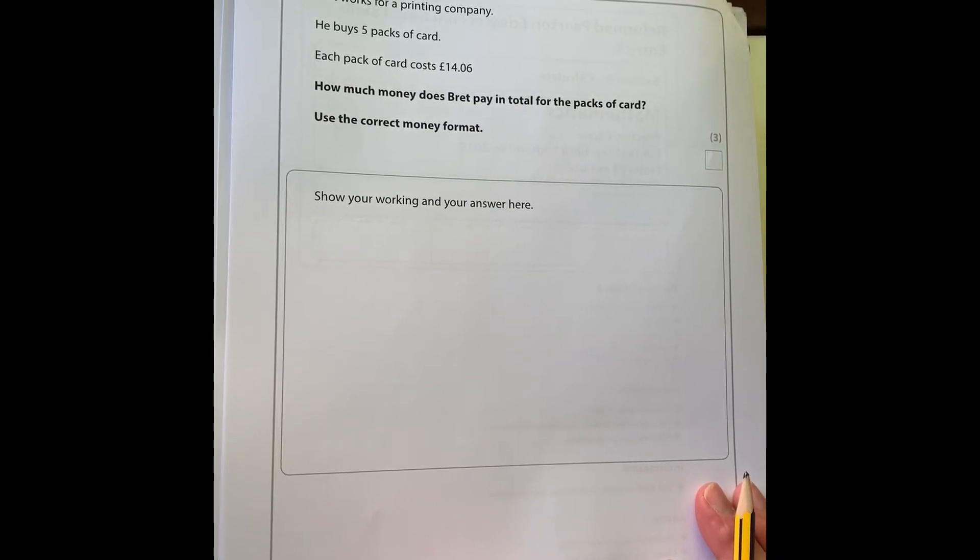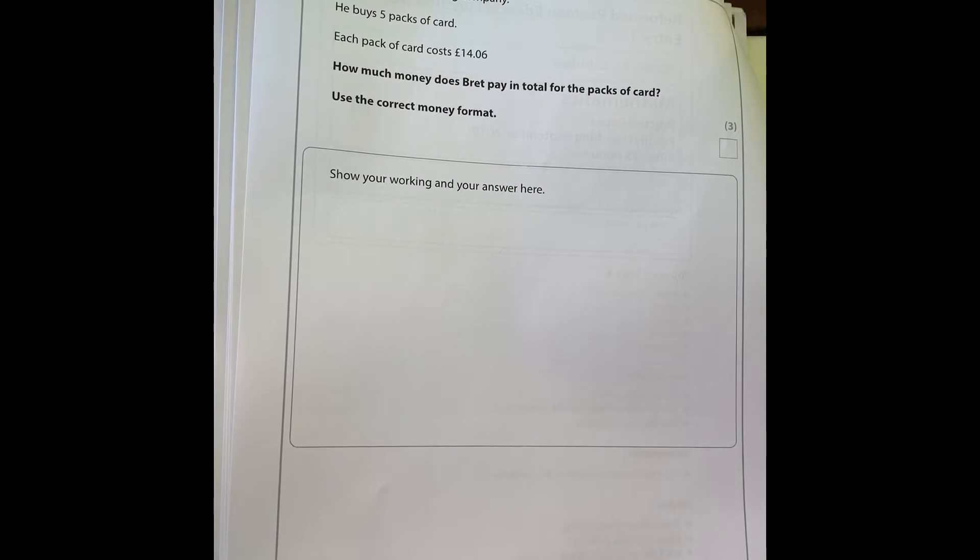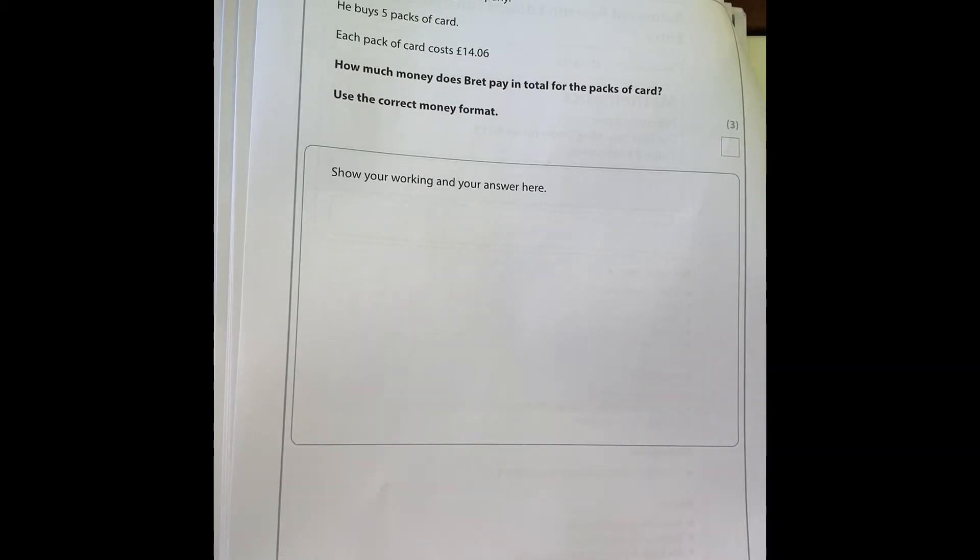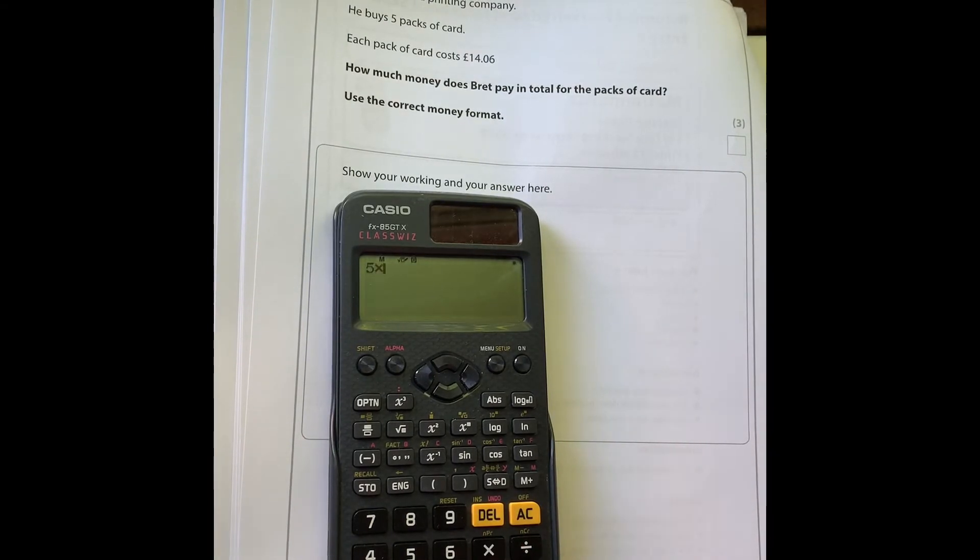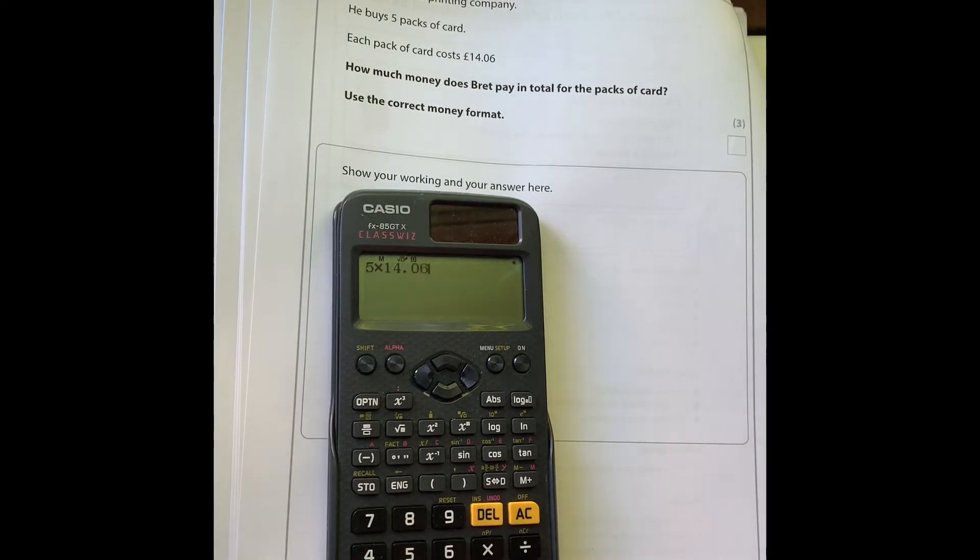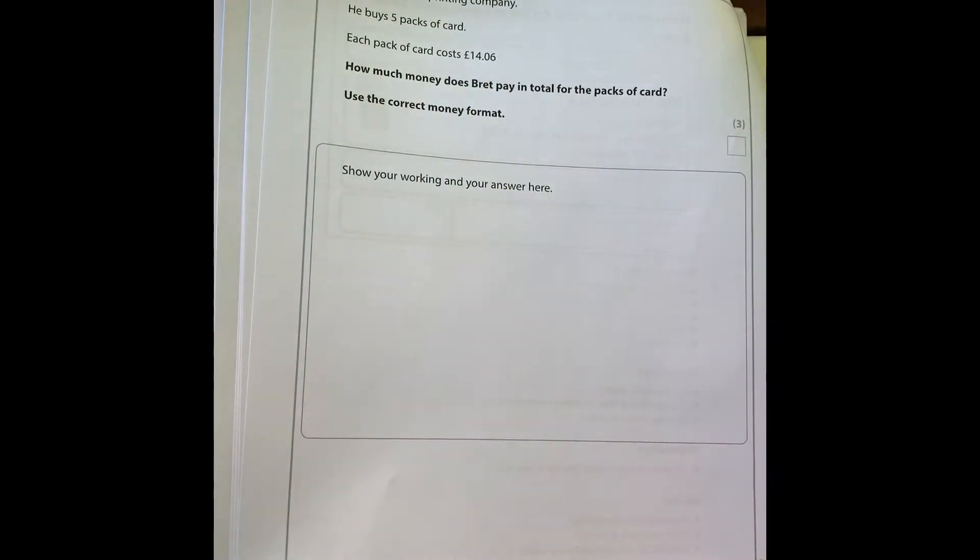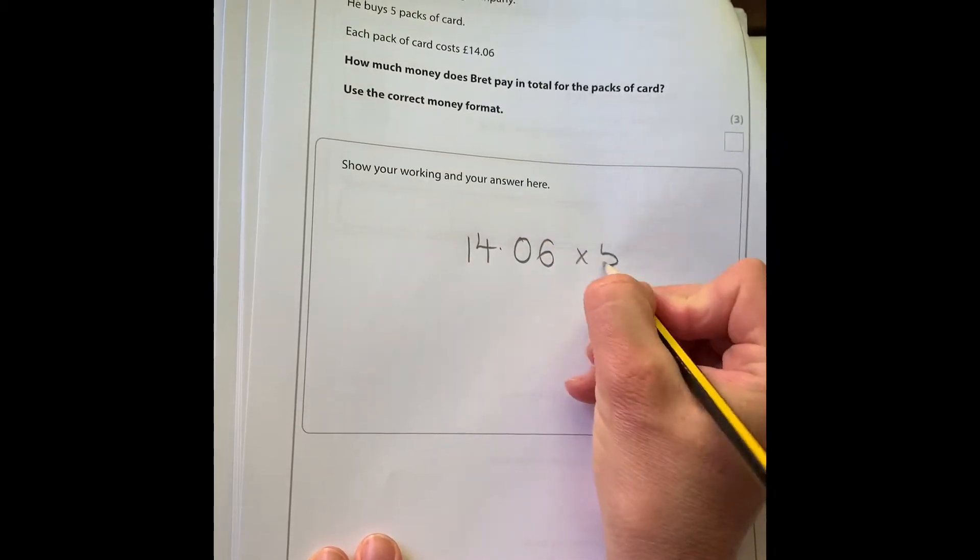How much money does he pay in total for the packs of card? I'm just looking for my calculator because this is a calculator paper. So what we're going to do here is multiply with the calculator: 5 times 14.06.